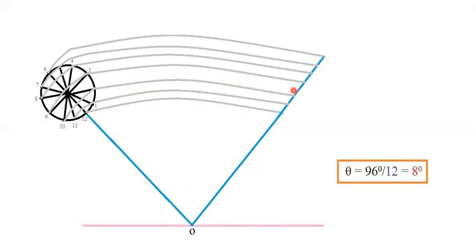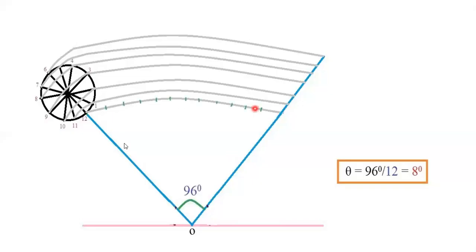Now divide the 96-degree angle into 12 equal parts; 96 ÷ 12 gives 8 degrees each. Keep your protractor at point O with line 12 as your base. Mark angles at 8, 16, 24, 32 degrees and so on up to 12 equal parts. Try to extend each line from O so that it meets the locus of center. You can then divide this arc into 12 equal parts and name the points as 1′, 2′, 3′, 4′, and so on.